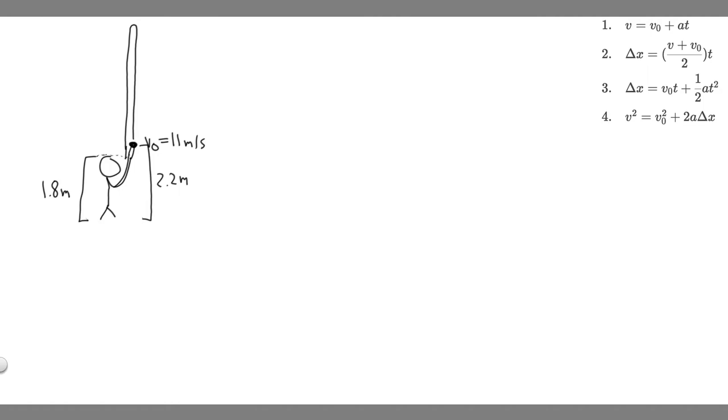So that's going to be the problem, and what we want to always do first is draw what's going on. So we have the shot putter, they're 1.8 meters tall, but they're going to be releasing the ball or throwing it from above their head. Basically 0.4 meters above their head because it's at 2.2 meters.